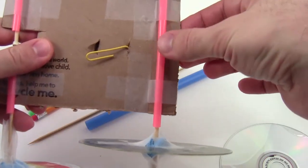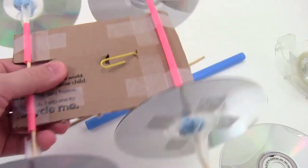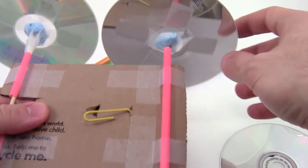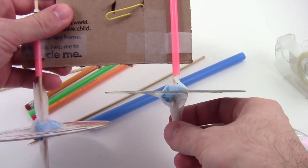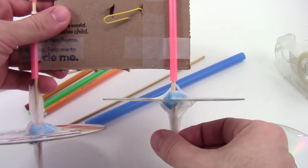Thread the pencil or skewer through a straw just like you would with a bottle cap, attach the other CD to the other side, and then use tape to secure the CDs to the axle to keep them perpendicular to it so they don't wobble when it spins.